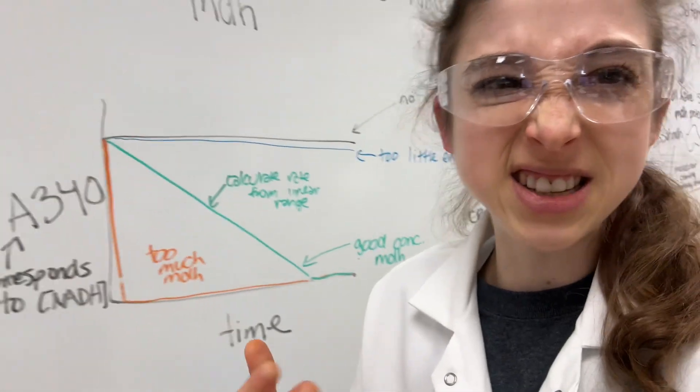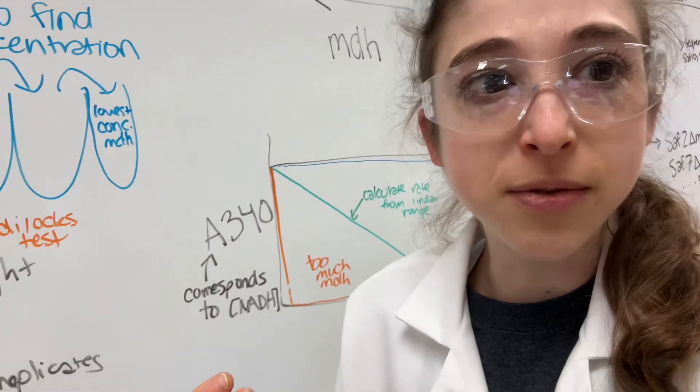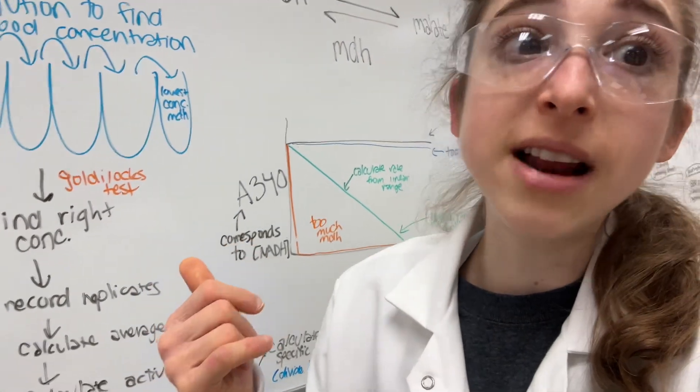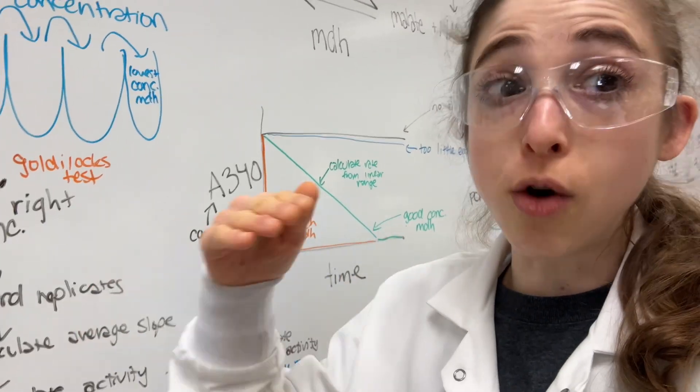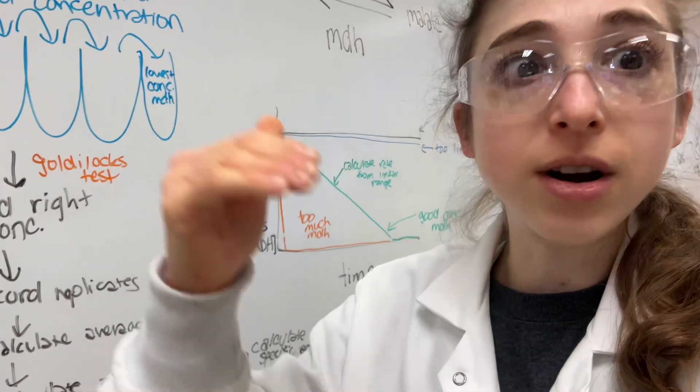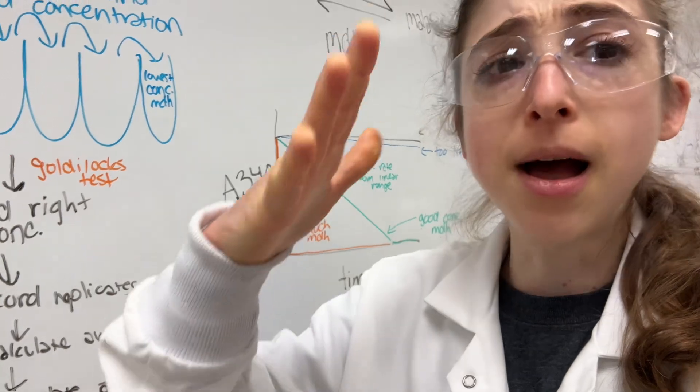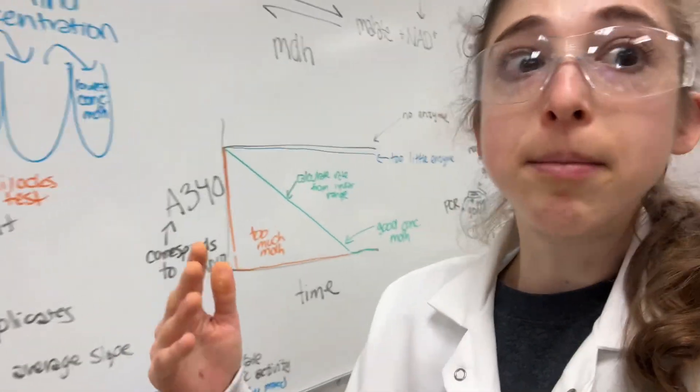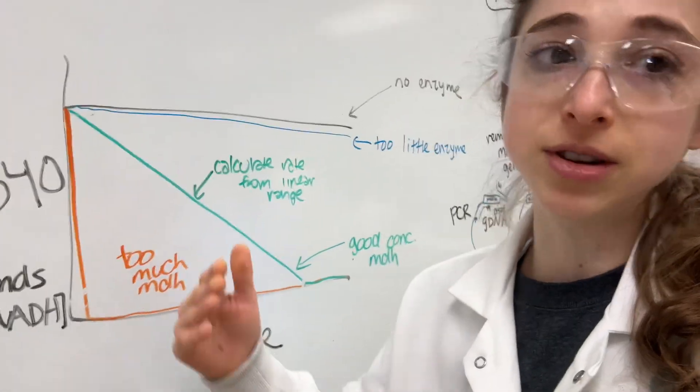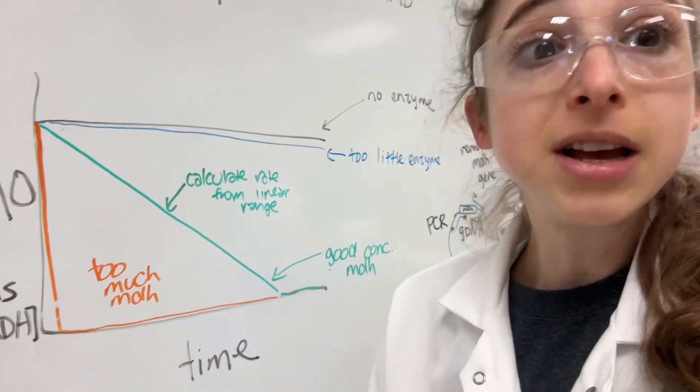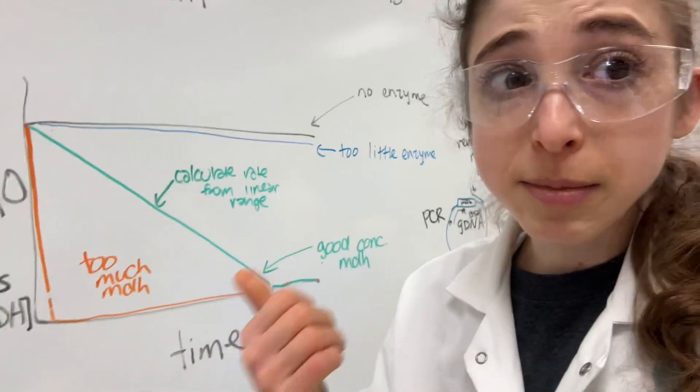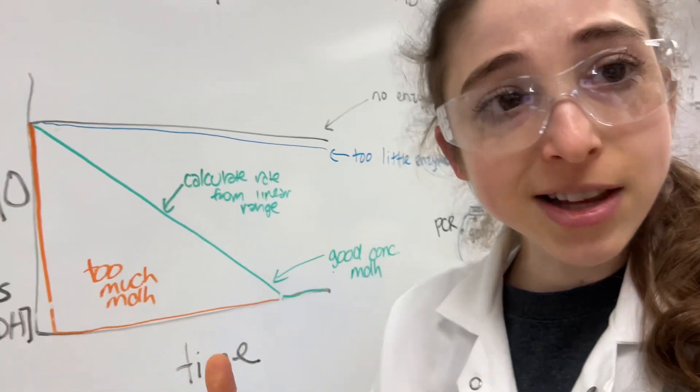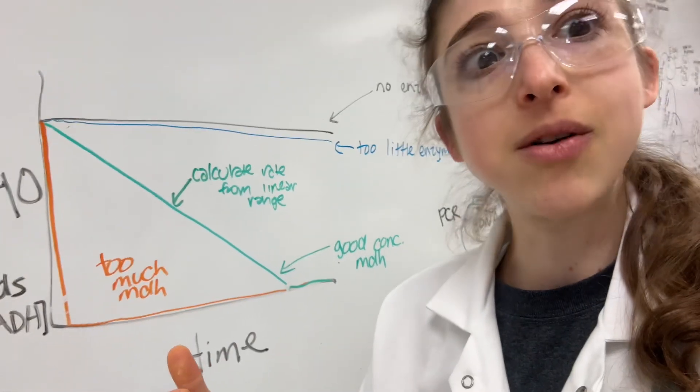But basically, in order to figure out kinetic constants, things like your Km and your Vmax and your Kcat and all that good stuff, what you have to do is, instead of doing one concentration over time, you have to do different concentrations and then get the initial rate at those different concentrations. But you need to know what concentration of enzyme to use in order to get those nice linear rates. So, now we know what concentration of enzyme we want to use.